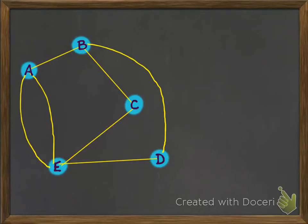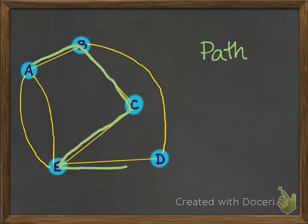We're going to do some things with this network here. You can see it's a connected graph. The first thing we're going to have a look at is what a path is. It's exactly what you'd expect — a path is a route through some nodes.